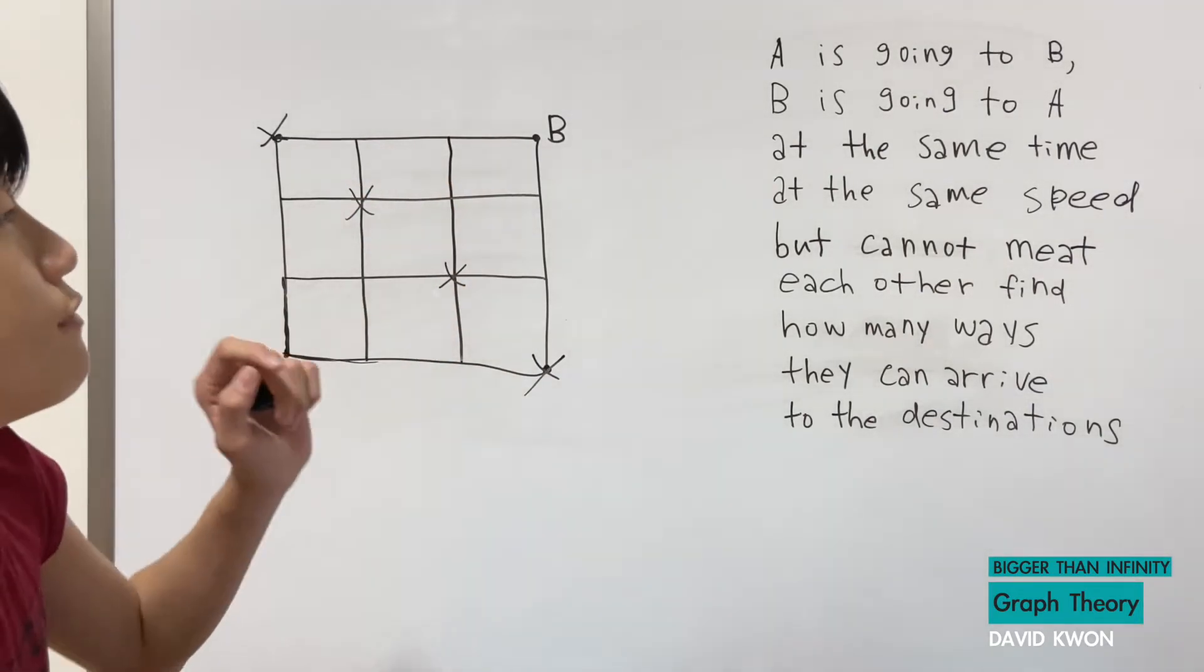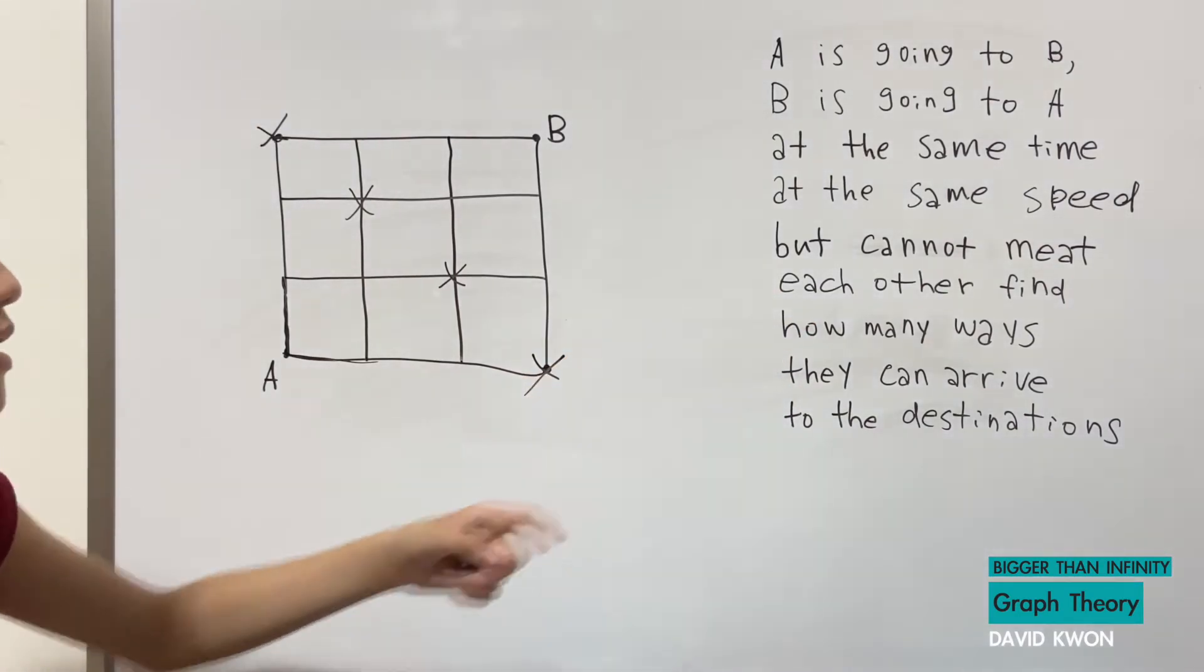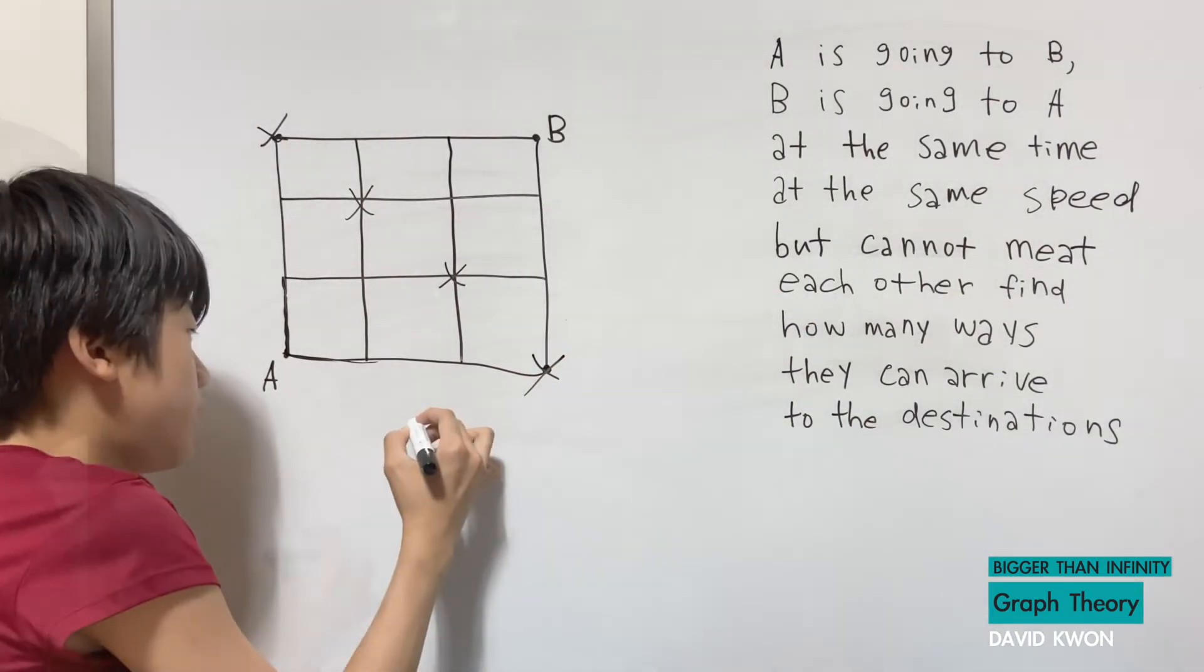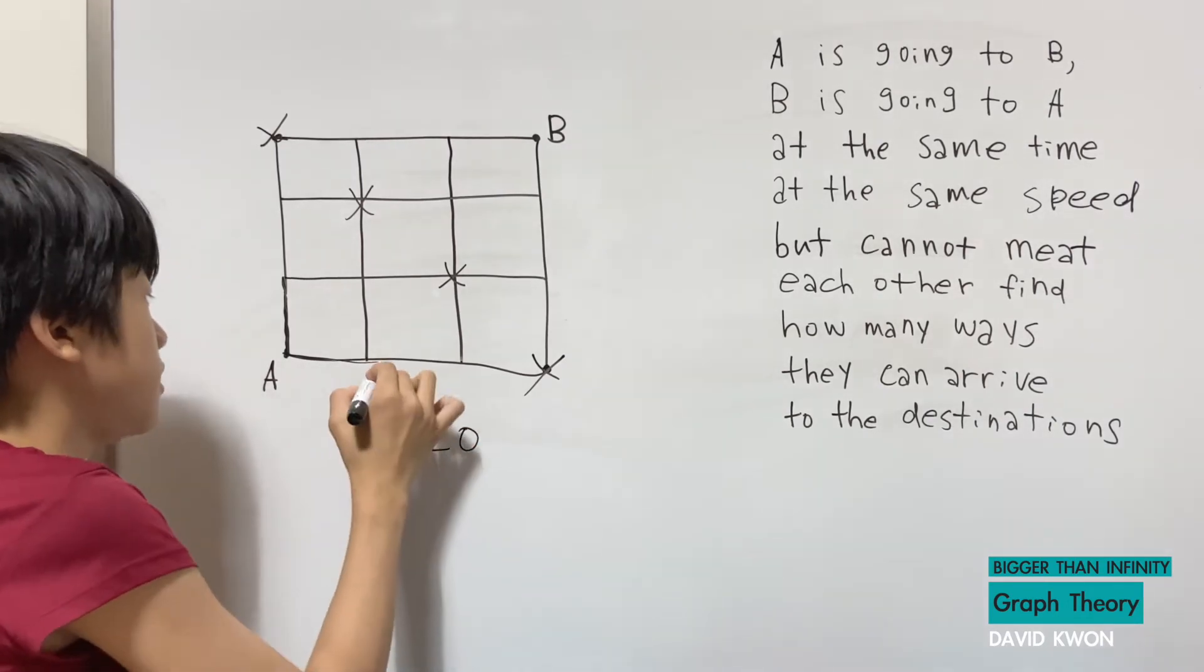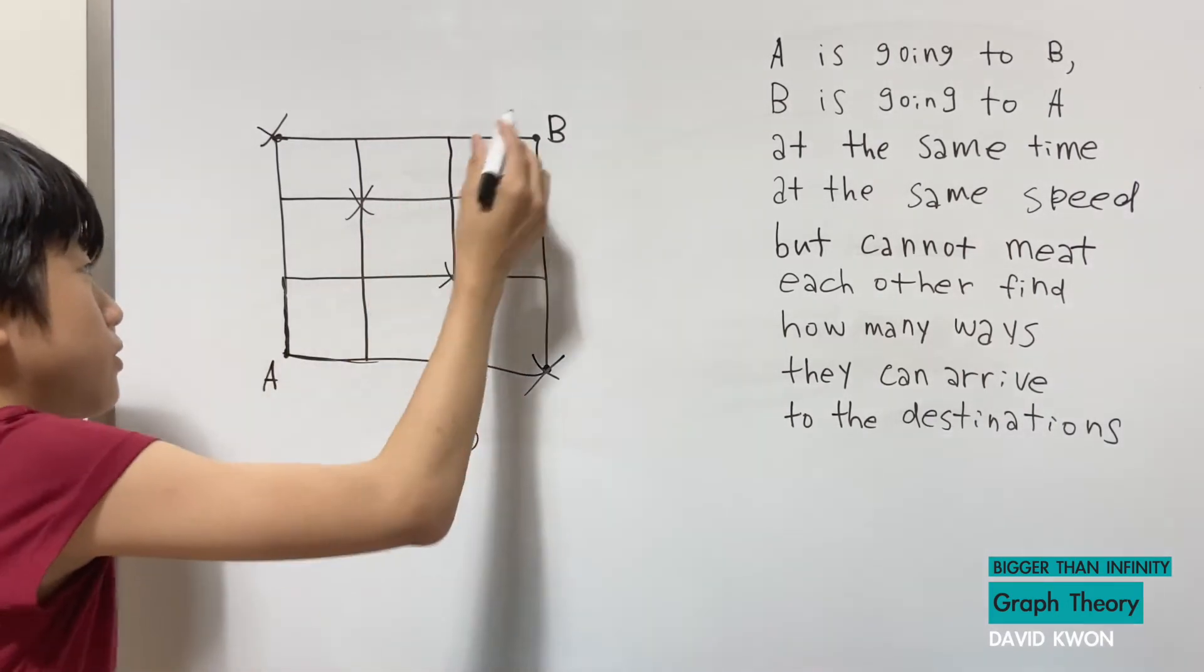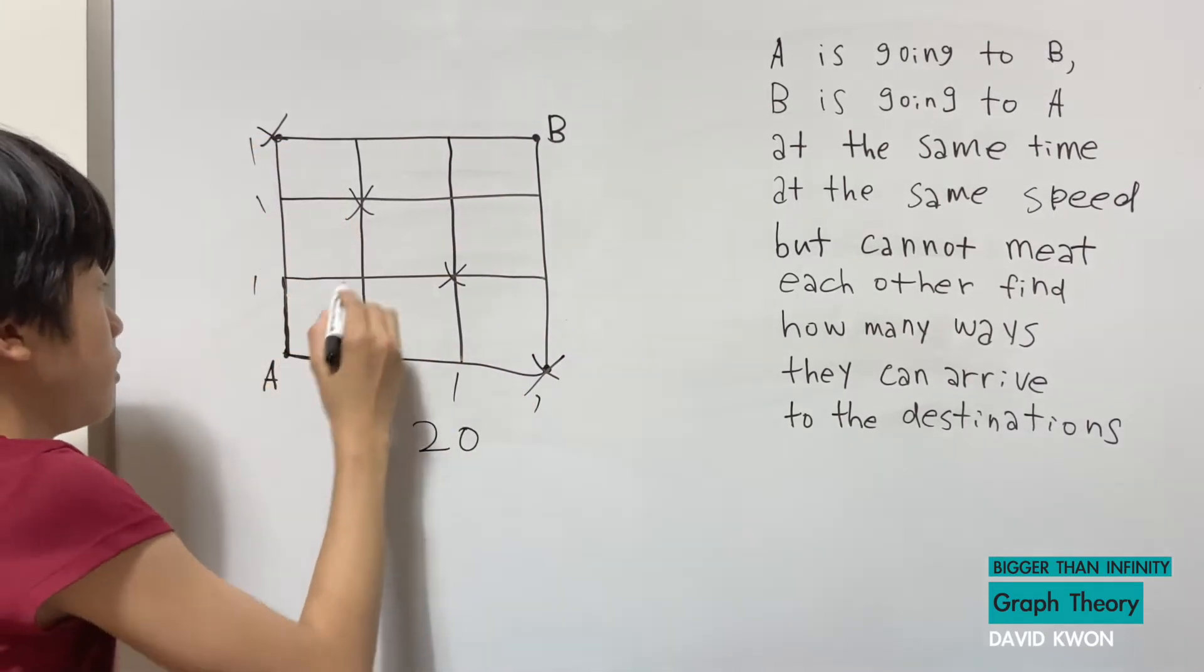And here if we want to find if they do not meet each other and how many ways they can arrive to the destination then what I can do is from everything which is 20 because A can go to B, 1-1-1-1-1-1, A can take this path,